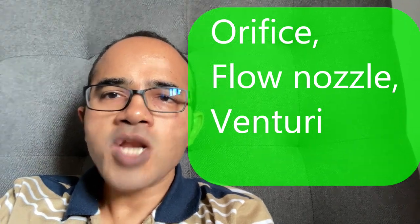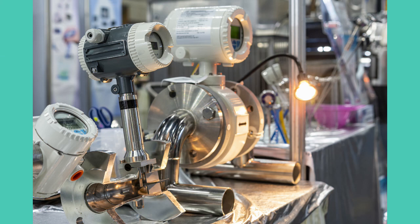These work on the principle of Bernoulli's, which states that velocity head and pressure head in a pipe remains constant. We measure pressure differential, and this differential pressure or DP is directly proportional to the flow. There are other types of flow measurements, such as a vortex flow meter, which requires placing a bluff body in the pipe and then measuring vortices produced due to the flow.